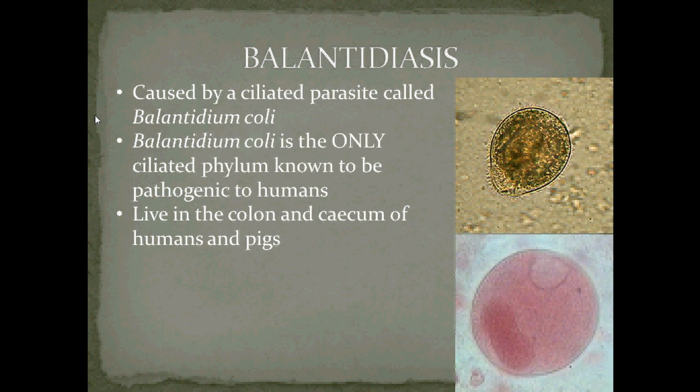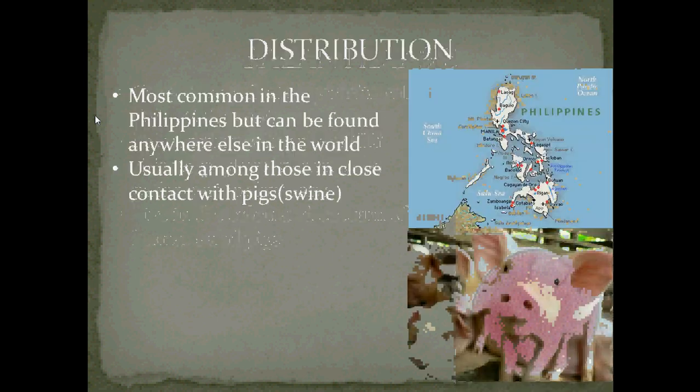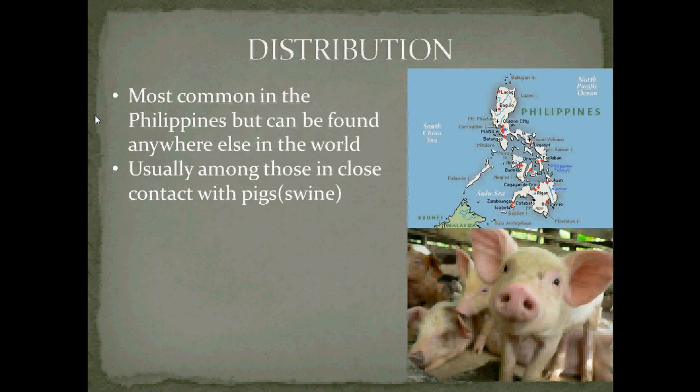Balantidium coli lives in the colon and cecum of humans and pigs. Balantidiasis is most common in the Philippines but can be found elsewhere, and most persistent among those who are in close contact with pigs.